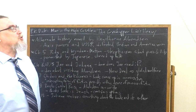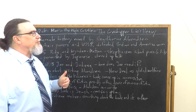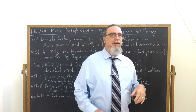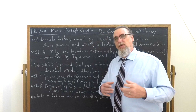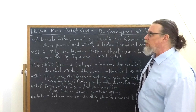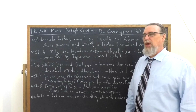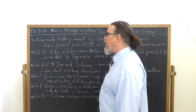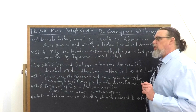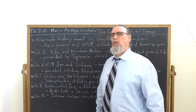In 'The Grasshopper Lies Heavy,' the timeline is a little bit closer to our own: the Axis powers are defeated. The USSR, which fights with the Allies, is also defeated, and the main winners are Britain and the United States. In the end, Britain and America are going to be at each other's throats as well. There are four main groups of people who are going to be discussing this book — besides Juliana and Abinson, which we'll discuss later because of an important wrinkle.